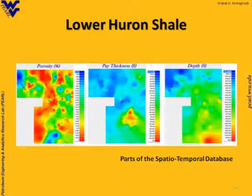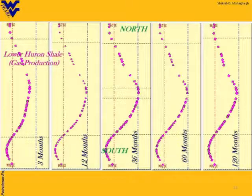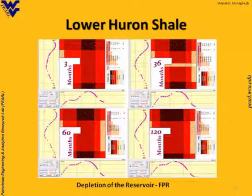This is the porosity, the pay thickness, and the depth maps that we get — and this is what we said for Lower Huron. This is in east-west, and this is in north-south. You put these together and you see how it works in three months, 36 months, 60 months, and 120 months.